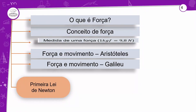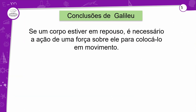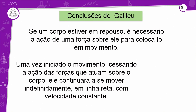Segundo Galileu, você aplica uma força, o movimento continua mesmo abandonando essa força. E se desprezar o atrito, ou em um lugar onde o atrito seja praticamente nulo, esse movimento é retilíneo uniforme e infinito — ele não para. Conclusões de Galileu: se um corpo estiver em repouso, é necessária a ação de uma força sobre ele para colocá-lo em movimento. Uma vez iniciado o movimento, cessando a ação das forças, ele continuará a se mover indefinidamente em linha reta com velocidade constante.